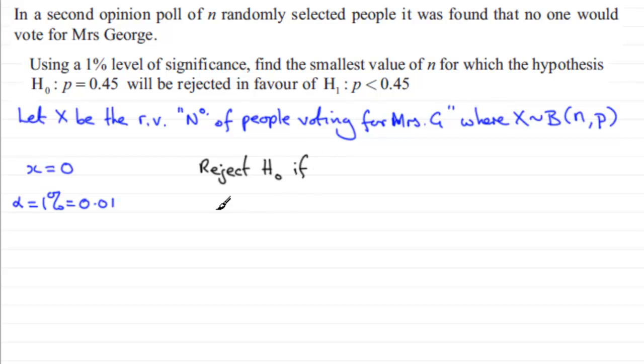I make up a statement that rejects the null hypothesis if the probability that our random variable X equals 0, no people in fact vote for Mrs George, given that the null hypothesis is true, in other words that P equals 0.45, if this probability turns out to be less than or equal to our significance level, which in this case is 0.01.